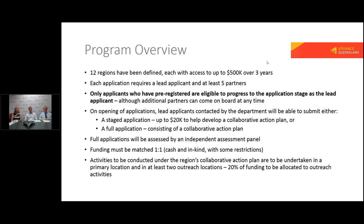We have divided the state up into 12 regions. We looked at different models and decided to follow local government boundaries in the main, and in some cases we've also focused on Regional Development Australia boundaries — certainly in the case of Ipswich and Westmoreton, Logan and Redlands, and some other key areas. There are always anomalies, and some regions would say they've historically fit into two regions — there is an opportunity for cross-regional linkages with this program. Each of the 12 regions has been allocated a $500,000 budget over three years for the entire region.